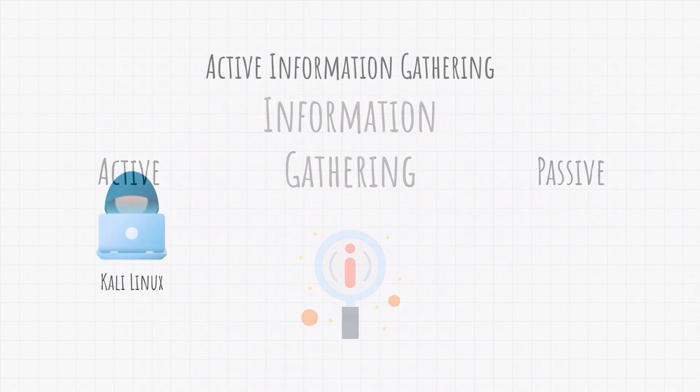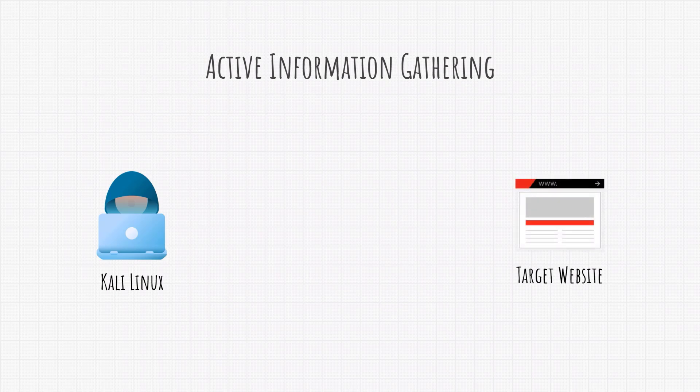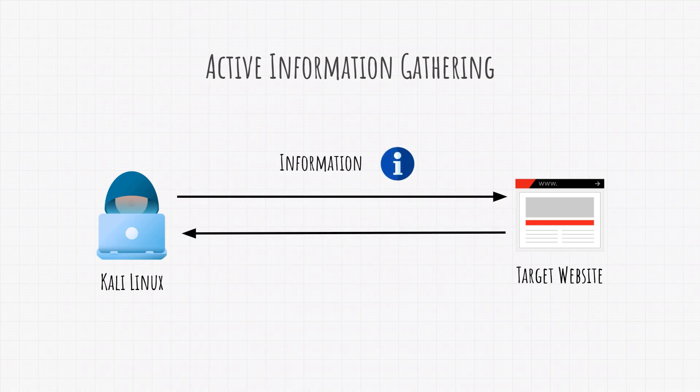Let's start with active information gathering. In active information gathering, we use our Kali Linux machine and try to get as much data as possible about our target while interacting with them. It could be a target website we need to test, a network we are testing, or perhaps an entire company. The main point is that with active information gathering, we directly get that data from the target.